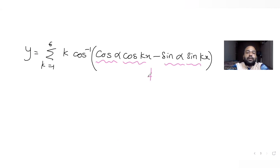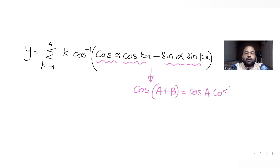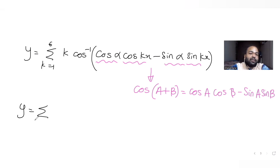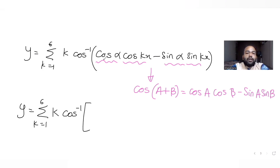This expression — cos α cos kx minus sin α sin kx — is the expansion of cos(α plus kx). So cos(a plus b) equals cos a cos b minus sin a sin b. The expression inside cos inverse becomes cos of (α plus kx).